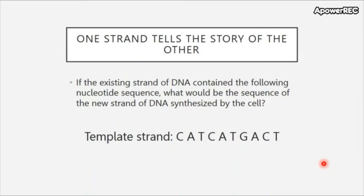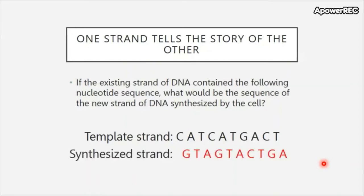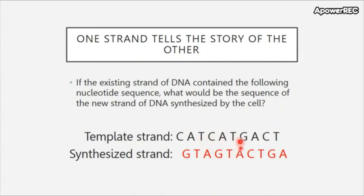If you took this template strand and tried to tell the story of the other strand, it should look like this: GTA GTA CTGA. That's because C's always bind to G's and A's always bind to T's, and you can work all the way down the line and write the new letters.